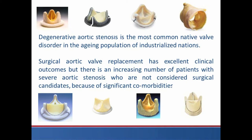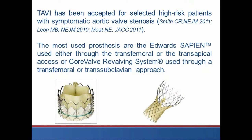Degenerative aortic stenosis is the most common native valve disorder in the aging population of industrialized nations. Surgical aortic valve replacement has excellent clinical outcomes, but there is an increasing number of patients with severe aortic stenosis who are not considered surgical candidates because of significant comorbidities. Transcatheter aortic valve implantation has been accepted for selected high-risk patients with symptomatic aortic valve stenosis.